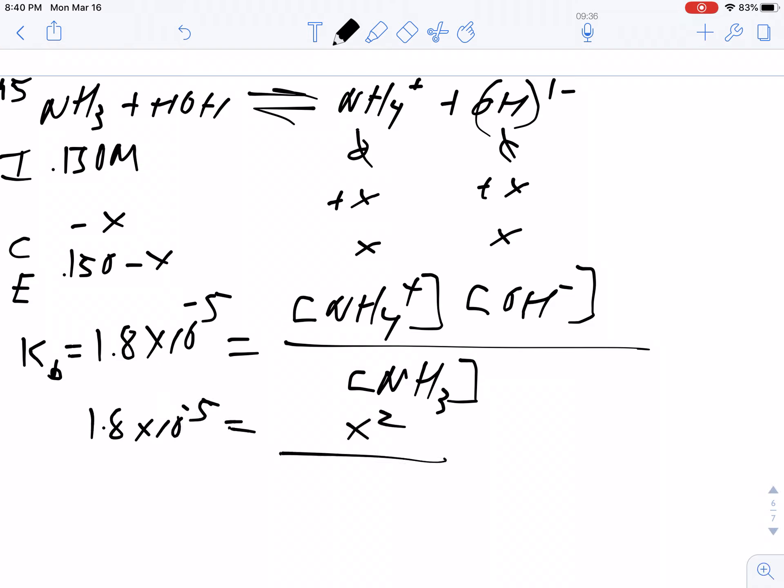This is going to be x squared over 0.15 minus x. Because 0.15 and 1.8 times 10^-5 are farther apart by more than 100, this x is too small. I solve for x and get 0.00164 molar of hydroxide.